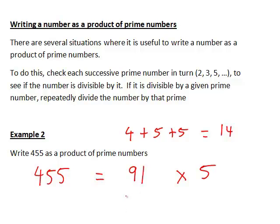What about 91? Is it divisible by any more prime numbers? The next prime number is 7. If we work out 91 divided by 7, we get 13.